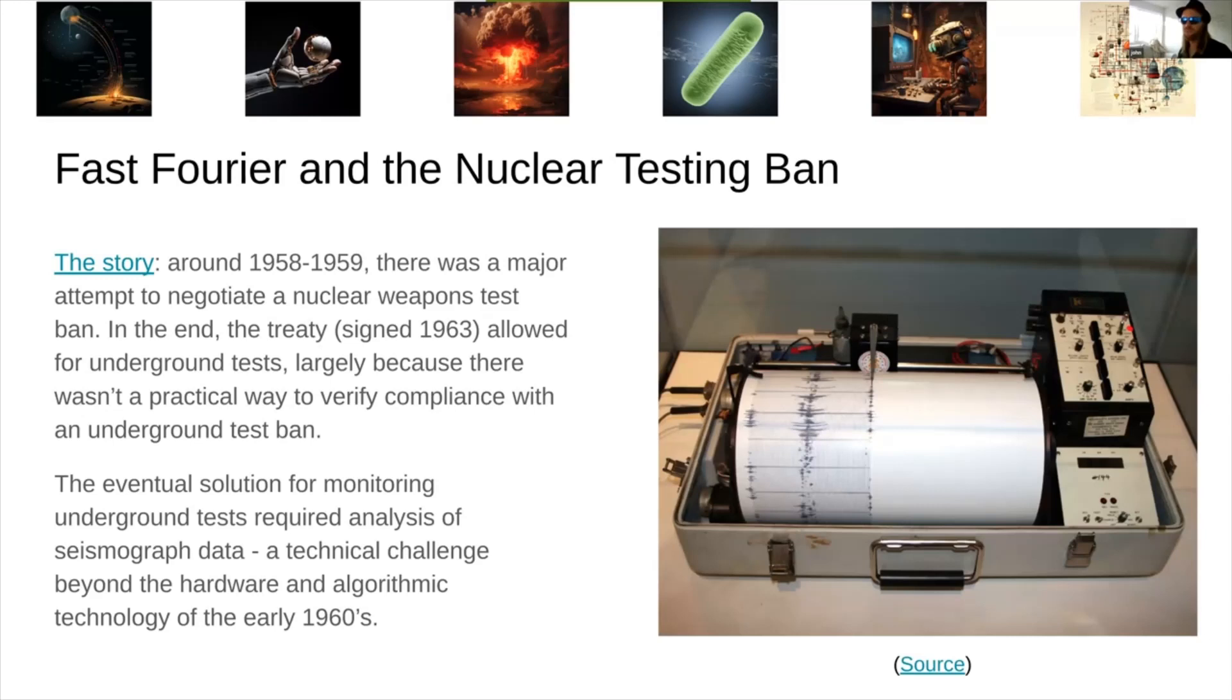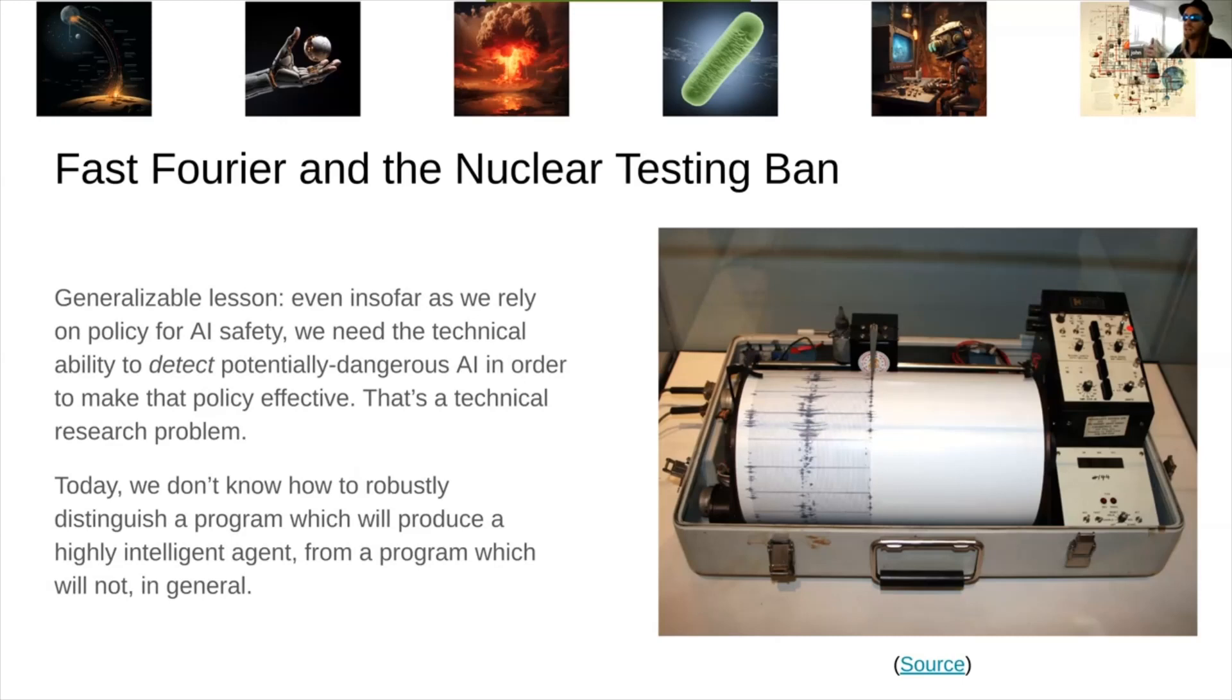Another way of looking at what we can do as researchers is thinking about, how do we get away from just being able to look at the raw behavior of this AI and be able to better probe what's actually going on inside of it so we can detect that sort of thing? Changing gear again. Third different frame for our role as researchers. There's this story that around late 50s, early 60s, there was this big attempt to negotiate a nuclear weapons test ban. And the eventual treaty that was signed allowed for underground tests. It banned open-air tests, banned underwater tests, banned space tests, but it allowed underground tests because there wasn't a practical way to verify compliance with the ban. The eventual solution for monitoring underground nuclear tests requires analysis of a bunch of seismograph data, but that was a technical challenge that was beyond capabilities of the early 1960s.